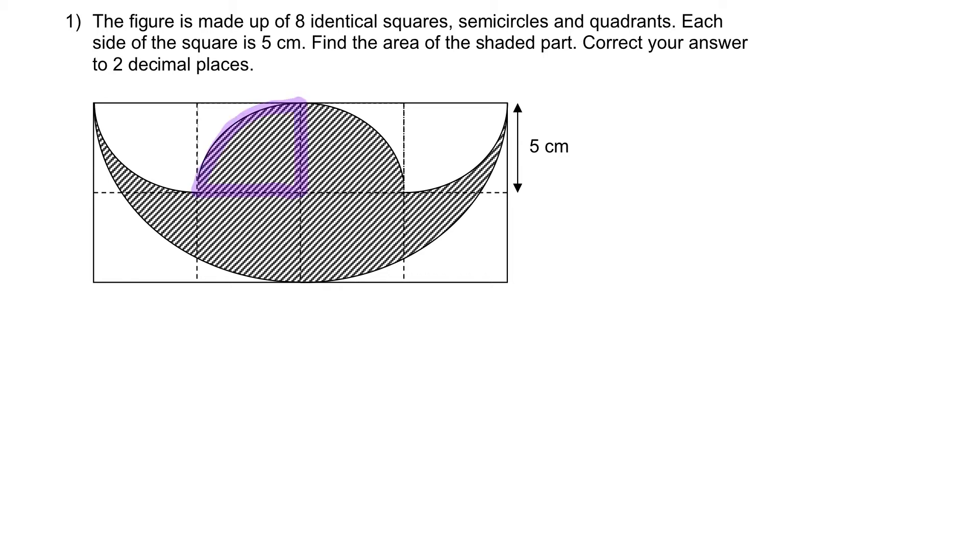Now let's take note of this shaded part. One quadrant and then there is another quadrant over here. To make things simpler, imagine right now I'm going to shift this over here, this shaded part to occupy this space and this quadrant to occupy this space.